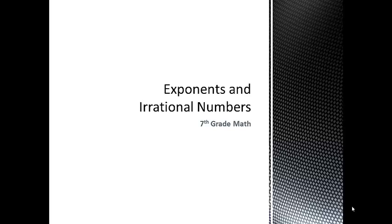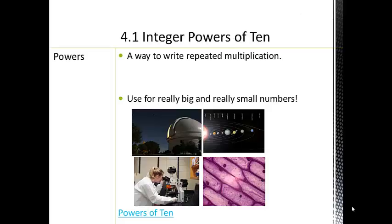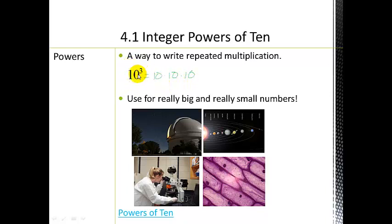Welcome to Chapter 4: Exponents and Irrational Numbers. Section 4.1 deals with integer powers of 10. A power is just a way to write repeated multiplication. For example, 10 to the third is the same as writing 10 times 10 times 10. Mathematicians want to be efficient, so they would rather write 10 to the third, or 10 cubed, than 10 times 10 times 10.